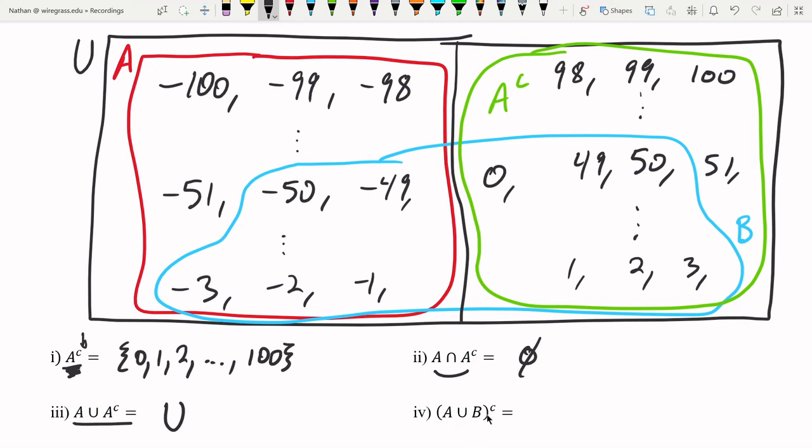And now we have A union B complement. A union B is inside parentheses. So we're going to do that first. I'm going to get rid of this A complement portion. You don't need it anymore.